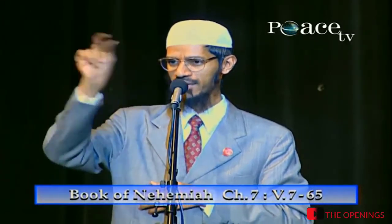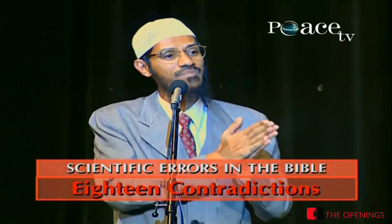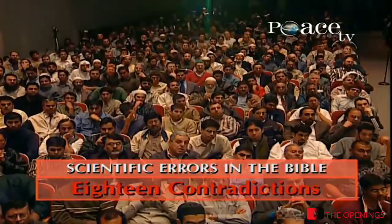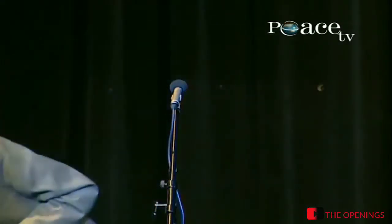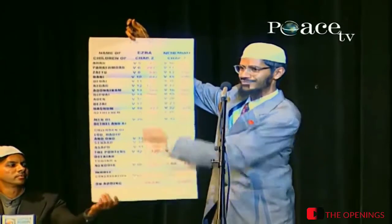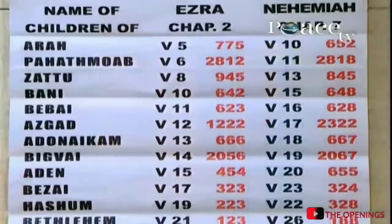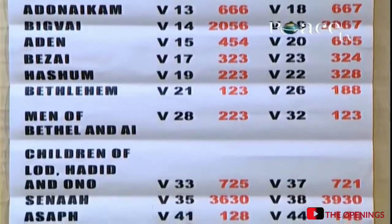The list is given with the names as well as the number of people released. In these 60 verses, there are no less than 18 times where the name is exactly the same but the number is different. There are no less than 18 contradictions in less than 60 verses of these two chapters.